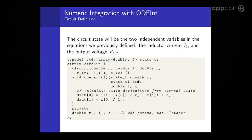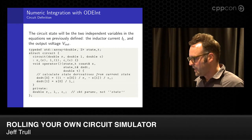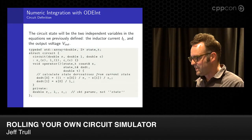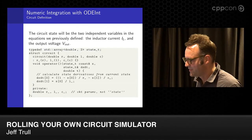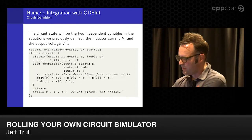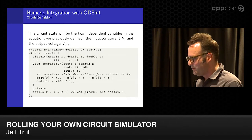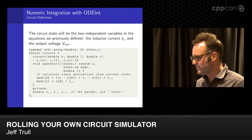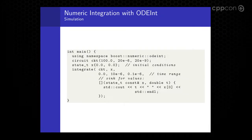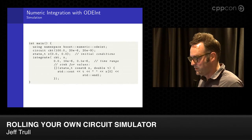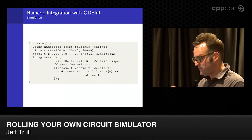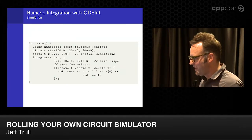Here's how this looks for our example circuit. I'm building another function object, but this time in the form that odeint wants to see. We have a state vector of two values; the operator takes the current value of the state variables and the time, and returns in the second reference parameter the change in the values. Instead of solving the differential equations to get one function of time, I've reorganized the equations to return the change in state variables as a function of time. When calling this, I instantiate the circuit, create the initial conditions, and make the main call to the integrate function odeint provides — giving it the circuit object, initial conditions, time range, and something to do with the values as it calculates them.